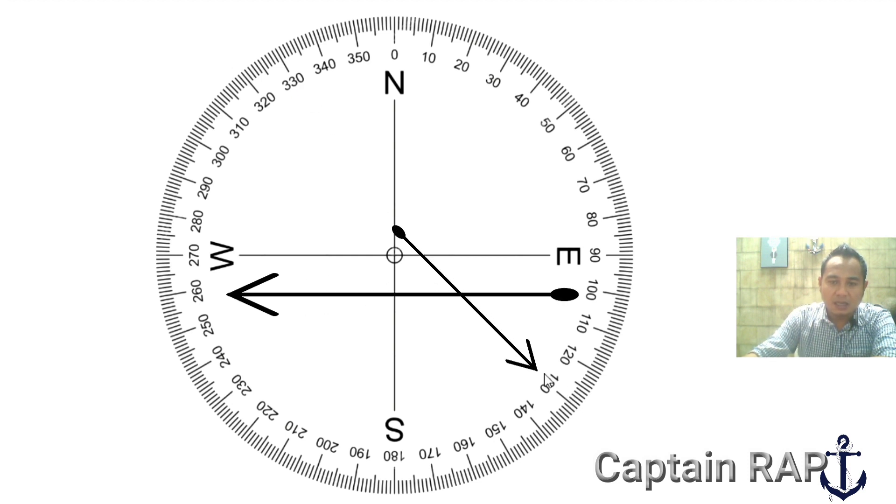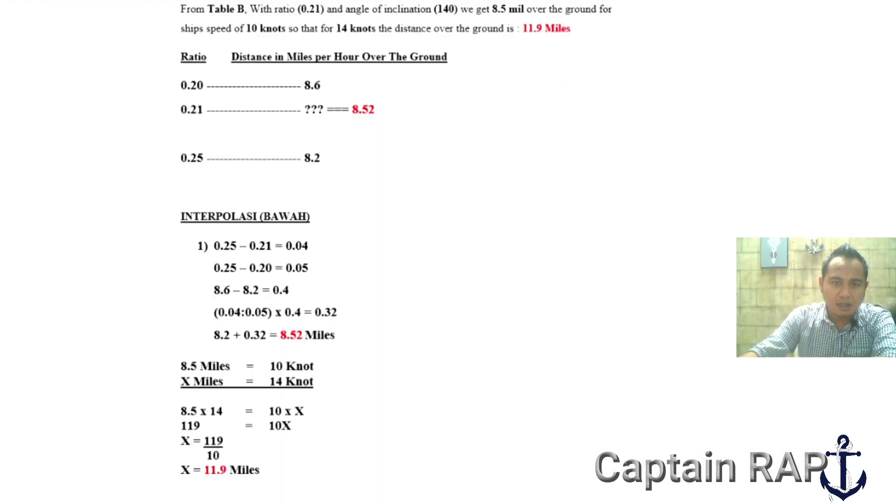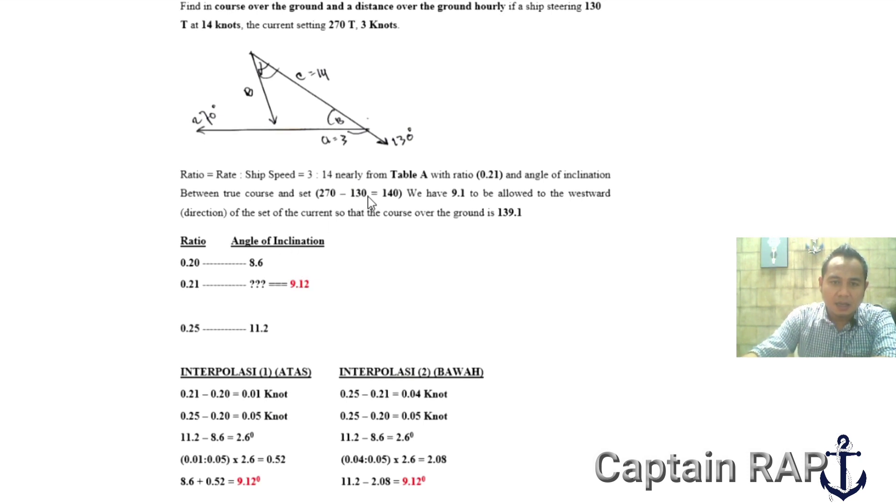Untuk mendapatkan hasil sudut yang akurat, saya tunjukkan lewat mawar pedoman. Jadi tadi dikatakan haluan kita 130 derajat ke sini, kemudian arusnya 270 derajat ke sini. Yang pertama kita lakukan adalah mencari course over the ground-nya sesuai dengan pertanyaannya. Di video sebelumnya saya sudah tunjukkan cara bagaimana menghitung course over the ground. Cara mencarinya adalah kecepatan kapal dibagi dengan kecepatan arus. Jadi rasionya itu adalah kecepatan arusnya 3 knot, kecepatan kapal 14, 3 dibagi 14 hasilnya adalah 0.21. Kemudian angle of inclination-nya antara haluan kapal dengan arah arus, jadi 270 derajat dikurang 130 derajat hasilnya 140 derajat.